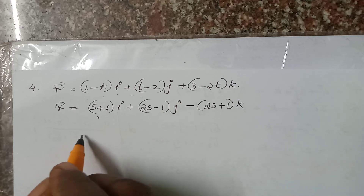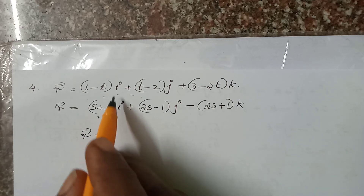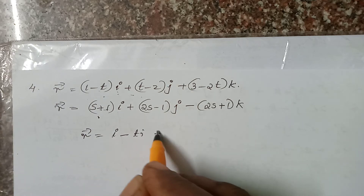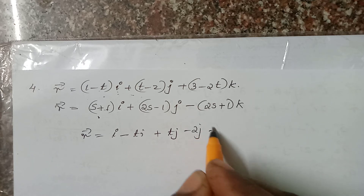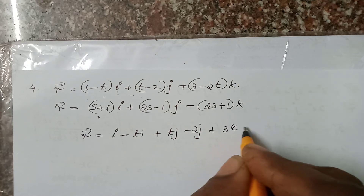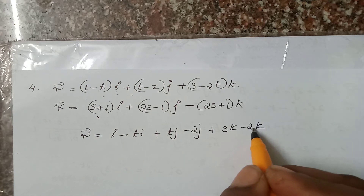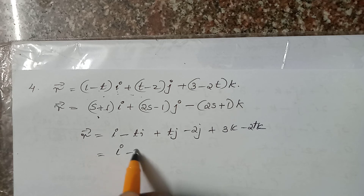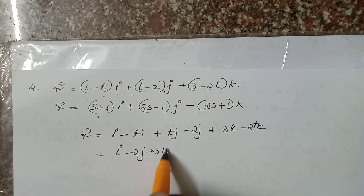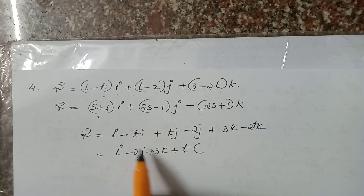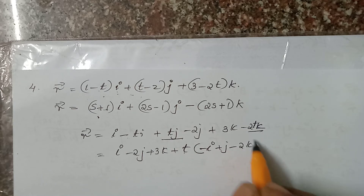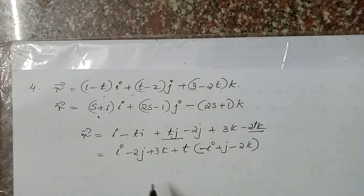In this example, we have the line given in parametric form. The first line gives direction vector minus i plus j minus 2k, and the second line gives direction vector i plus j minus 2k. Setting up the terms: I minus T into I, TJ minus 2J, 3K minus 2K. We get I minus 2J plus 3K plus T into minus I plus J minus 2K.